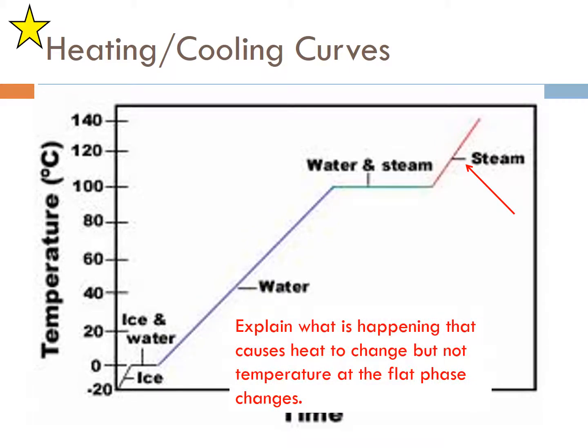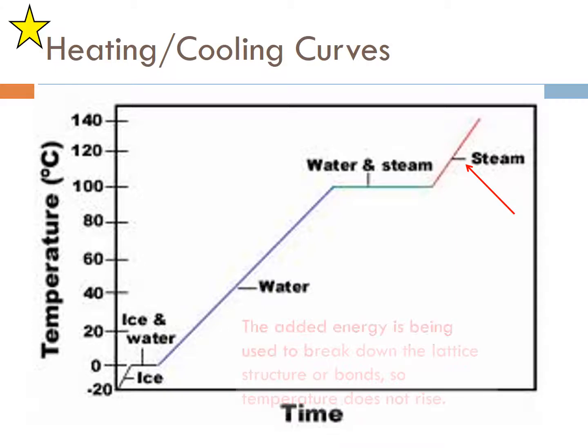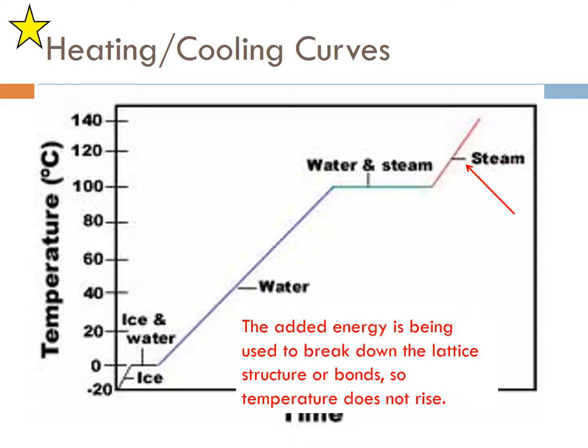Explain what is happening that causes heat to change but not temperature at the flat phase change. The reason why there's no temperature change is because you're in a phase change. All that phase that you're going from previously, so for example liquid water into steam, all the liquid water has to be removed at 100 degrees until all the water is steam. You can't raise the temperature past 100 until all that water turns into steam. The added energy is being used to break down the lattice structure or the bonds that temperature does not rise. You keep adding energy into it even though the temperature is not changing, it's still breaking those bonds or structure down.